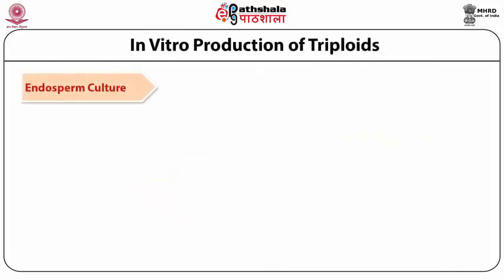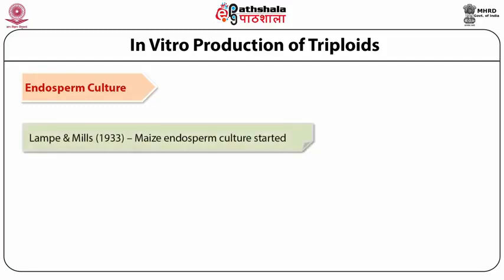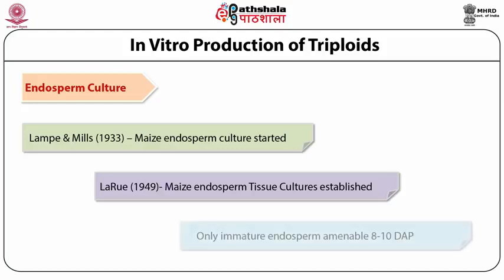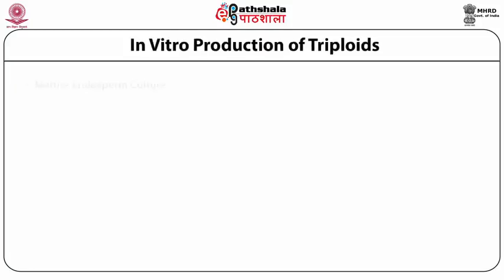As early as 1933, Lampe and Mills made an effort to culture the endosperm, but it was to the credit of LaRue in 1949 to establish a continuously growing tissue culture of maize endosperm. In maize, the endosperm is massive and the mature seed has the endosperm, but the mature endosperm is dead. Therefore, it has to be cultured at an early stage when it is physiologically alive — normally eight to ten days after pollination. After that, a number of people tried and established tissue cultures of endosperm from immature endosperm.